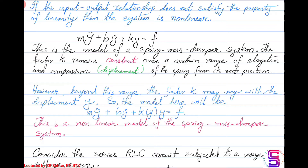In fact, most of the systems that are modelled as linear systems are because of the range of operation, or the region of operation, or the operating conditions to which they are subjected — under which they are basically linear.